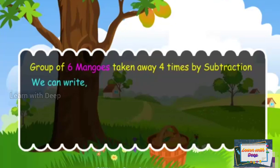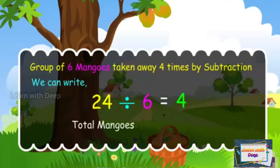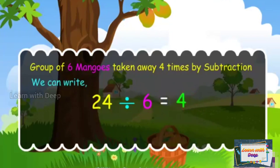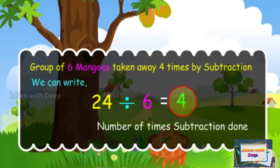We can write 24 divided by 6 is 4. 24 is the total mangoes. 6 is the mangoes in one group. 4 is the number of times subtraction was done.